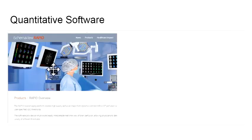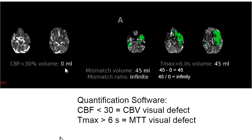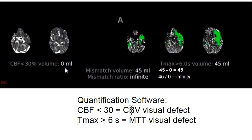Now I want to spend a few minutes talking about the quantitative software analysis that is available. You can buy a variety of quantitative post-processing software that will look at your CT perfusion maps and give you good information. This particular software package uses a CBF of less than 30 for core infarct — that's their equivalent to CBV visual inspection. For ischemia plus core infarct, they use a Tmax of greater than six seconds as the equivalent to the MTT visual defect.